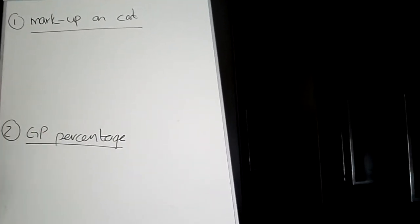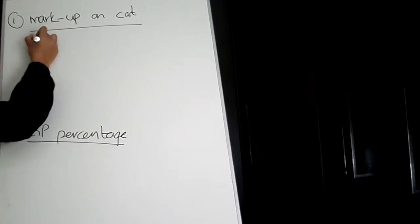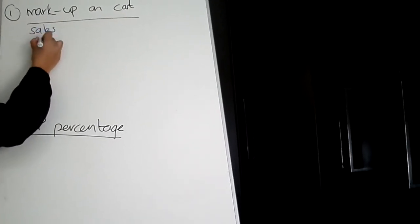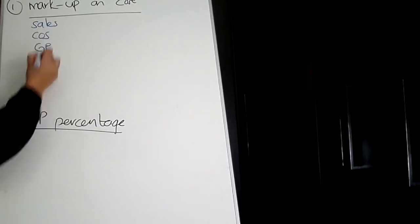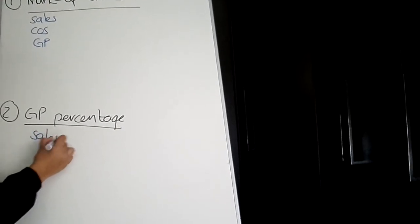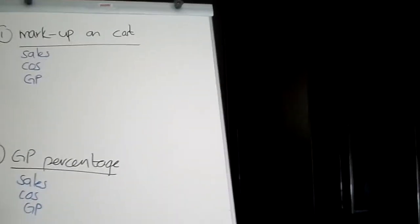The first step is always to write down your trading statement: sales, cost of sales, and gross profit. This will help you calculate what the percentages are.